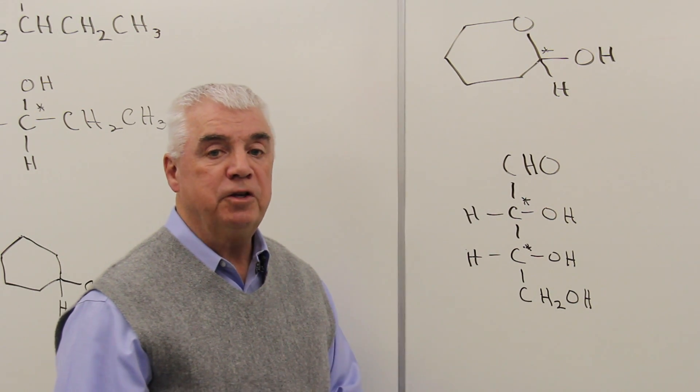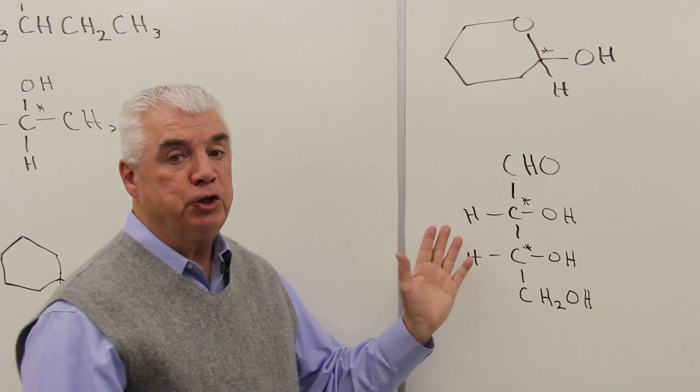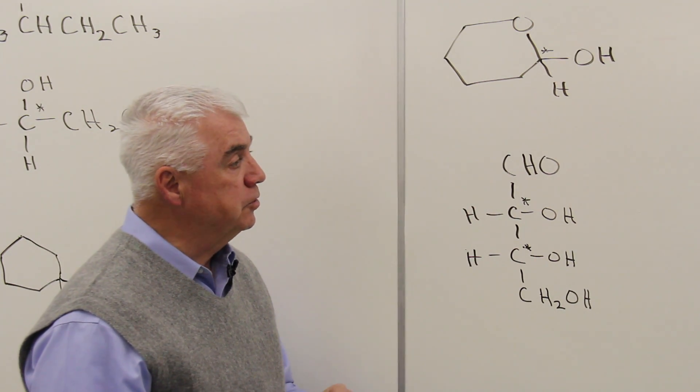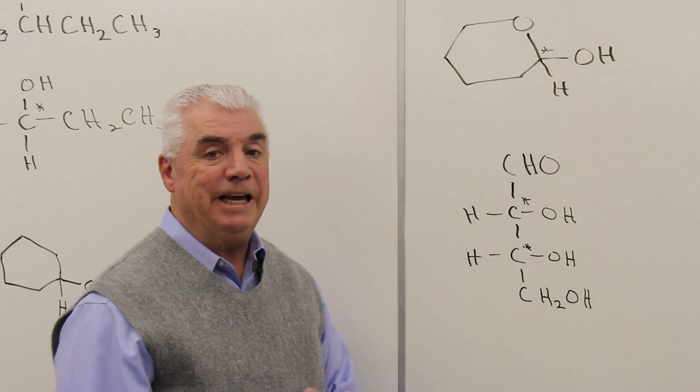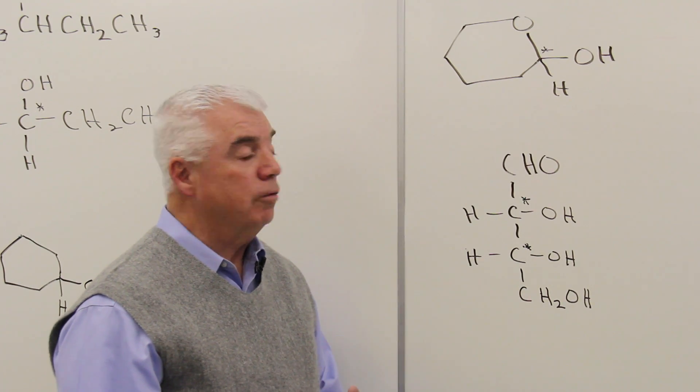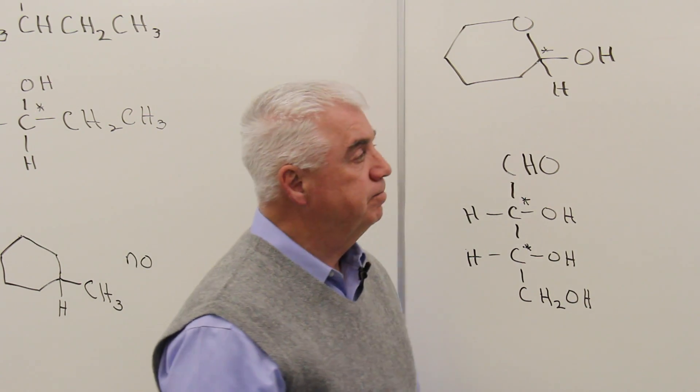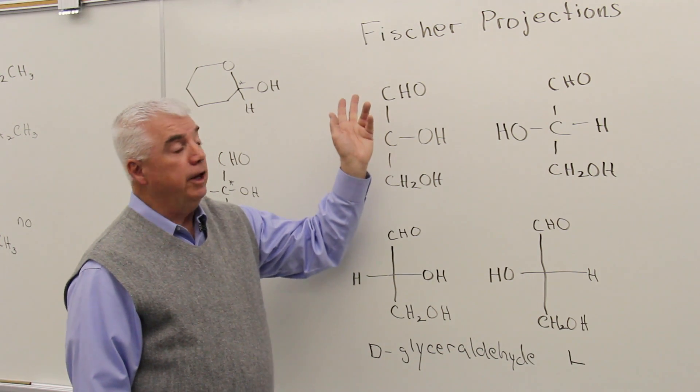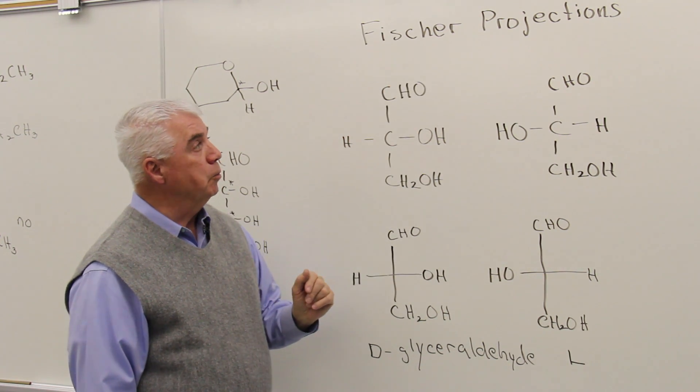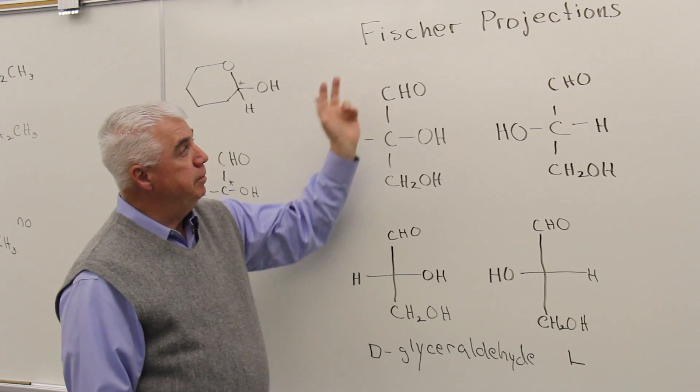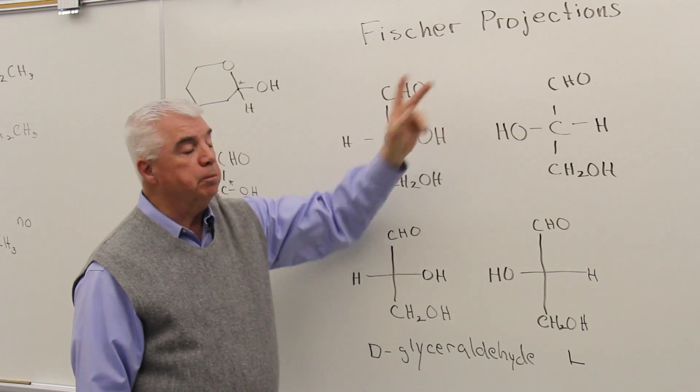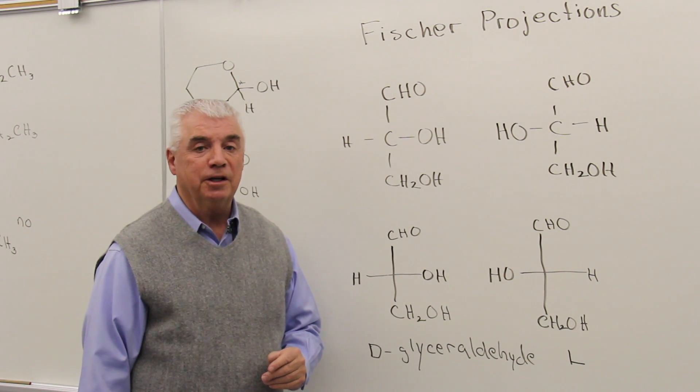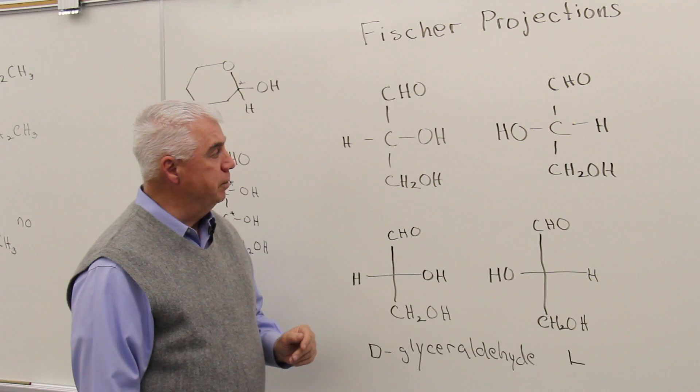And now let's go to a system where we, in two dimensions, we can show these chiral or molecules containing chiral carbons. It's called Fischer projections. This leads us to a second learning objective for this chapter on carbohydrates. Being able to draw Fischer projections of molecules that contain chiral carbons. Here are the two structures now for glyceraldehyde.